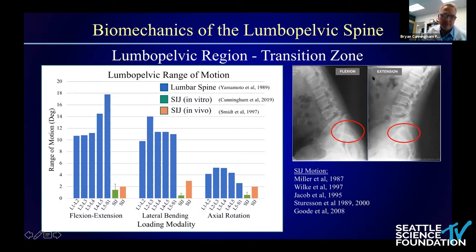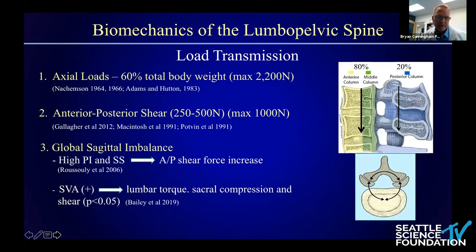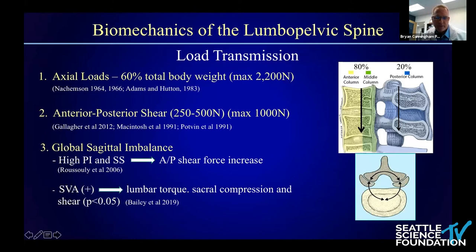As we transition from the lumbar spine into the pelvis via the SIJ, we're posed with a significant kinematic transition zone. Although motions are reduced, importantly the load transmission doesn't really change. The axial load in the lower lumbar spine is about 60% of total body weight, with 80% transmitted through the anterior and middle columns, and the remaining 20% through the posterior column, in the non-degenerative state.